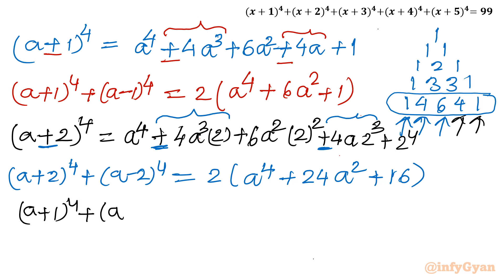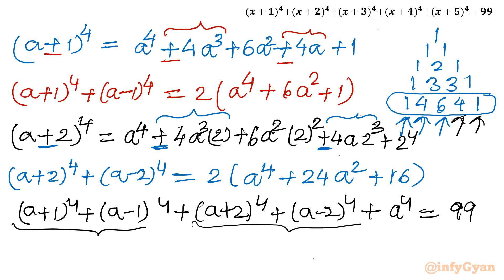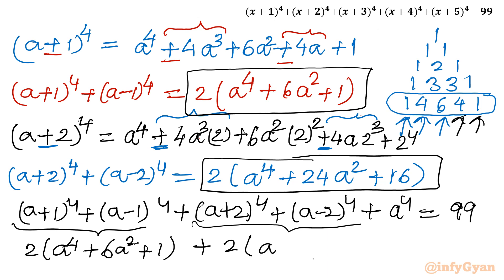Substituting back, the full equation is: (a + 1)⁴ + (a − 1)⁴ + (a + 2)⁴ + (a − 2)⁴ + a⁴ = 99. Putting in the simplified values: 2(a⁴ + 6a² + 1) for the first pair, and 2(a⁴ + 24a² + 16) for the second pair, plus a⁴ = 99.